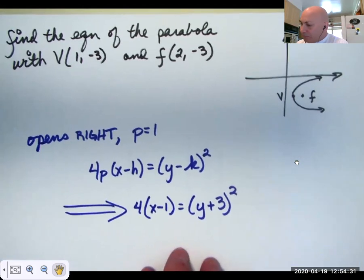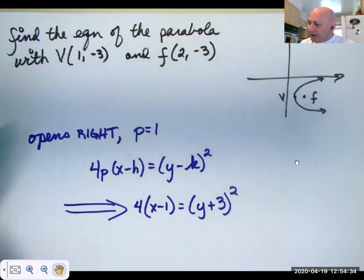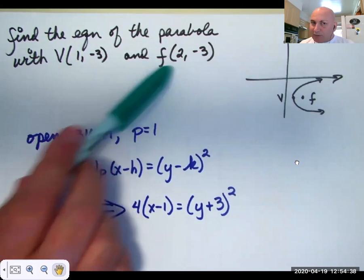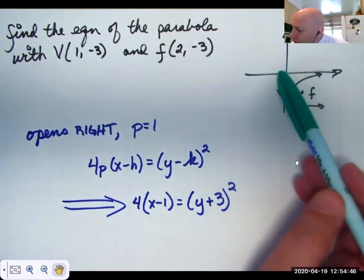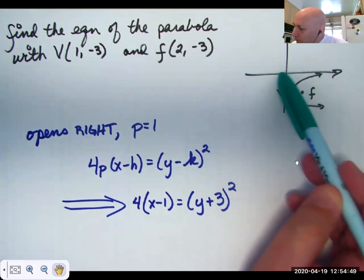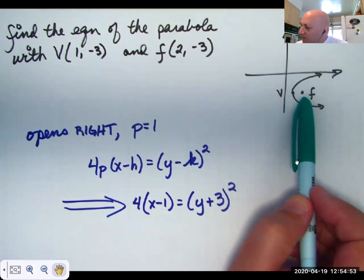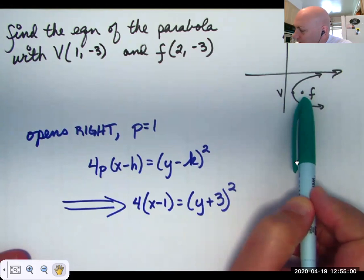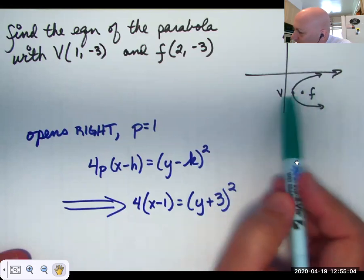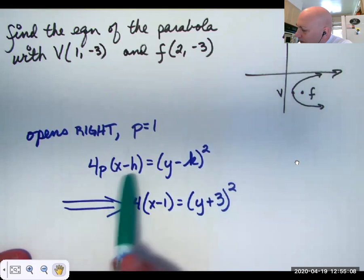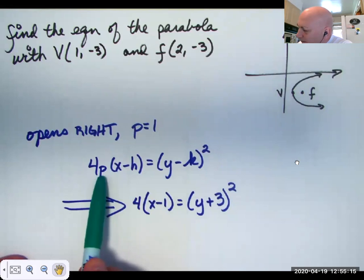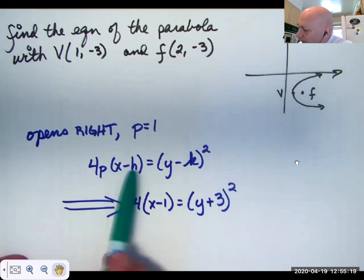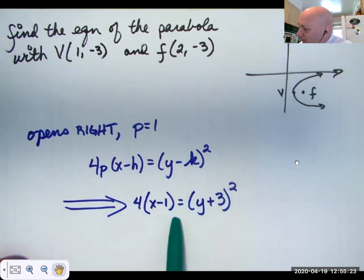Let's find the equation of the parabola that has vertex 1, negative 3 and focus 2, negative 3. It's much easier to graph those points. I go to 1, negative 3 for the vertex and 2, negative 3 for the focus. I can see the focus is to the right, so that tells me it's going to be an x equals y squared kind of parabola, not a y equals x squared kind. It opens to the right, and this distance is 1. So here's my equation for an x equals y squared parabola: substitute p equals 1, and vertex 1, negative 3. Here's the equation of my parabola.